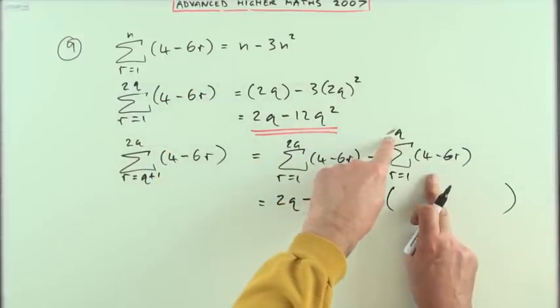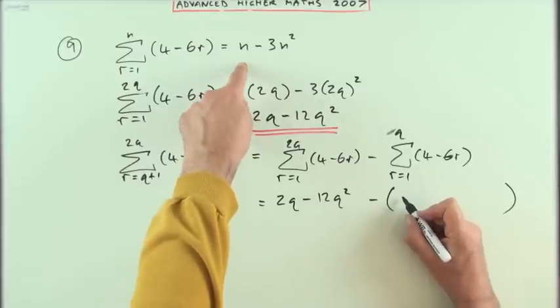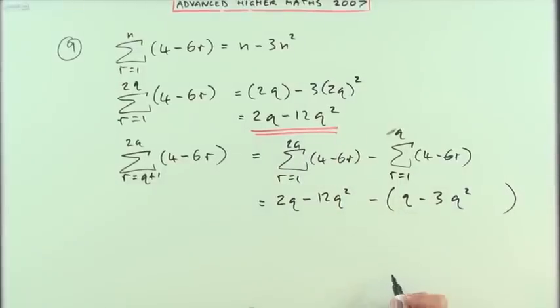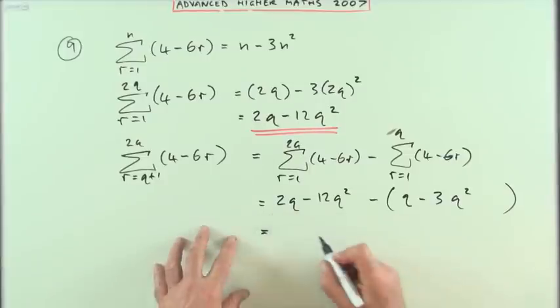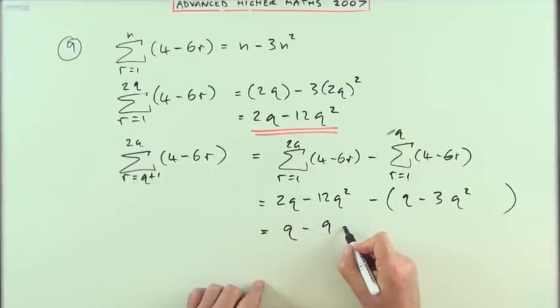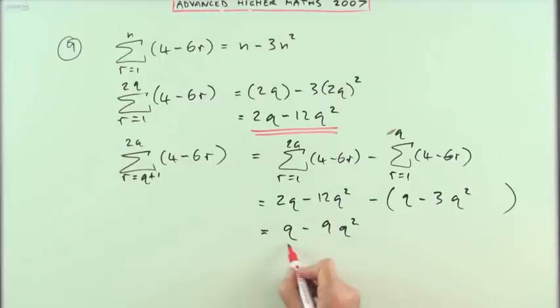So that'll be q minus 3q squared. So finally, what will that be? 2q take away a single q, that'll be a single q. Negative 12 plus 3, negative 9, so minus 9q squared as required. Not too bad.